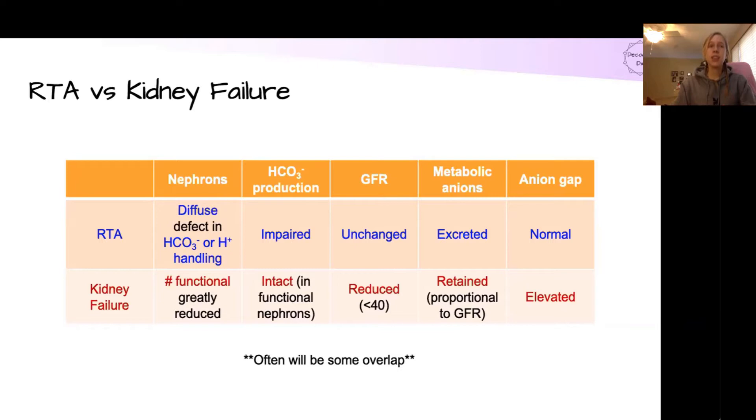In renal tubular acidosis, there's some sort of problem in the actual tubular cells handling of bicarbonate or acid, whereas in kidney failure, the overall number of nephrons is just reduced, but the healthy nephrons remaining still are able to handle the bicarbonate and acid like they would otherwise. Now it's important to know that oftentimes there will be overlap between these two. So in order to just learn them and distinguish them, we're talking about them on the two extremes or isolated parts of the spectrum where they're not overlapping. In RTA, the GFR is going to be unchanged, but in kidney failure, it's going to be reduced. And typically we don't even see metabolic acidosis from kidney failure until the GFR is below about 40.